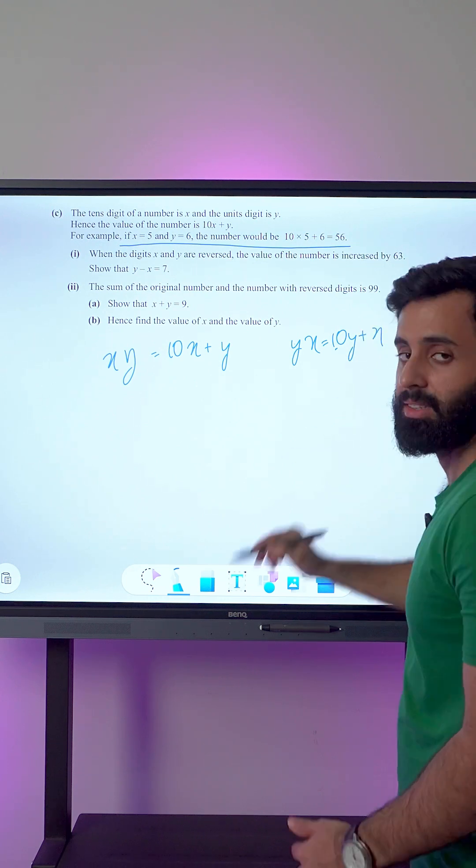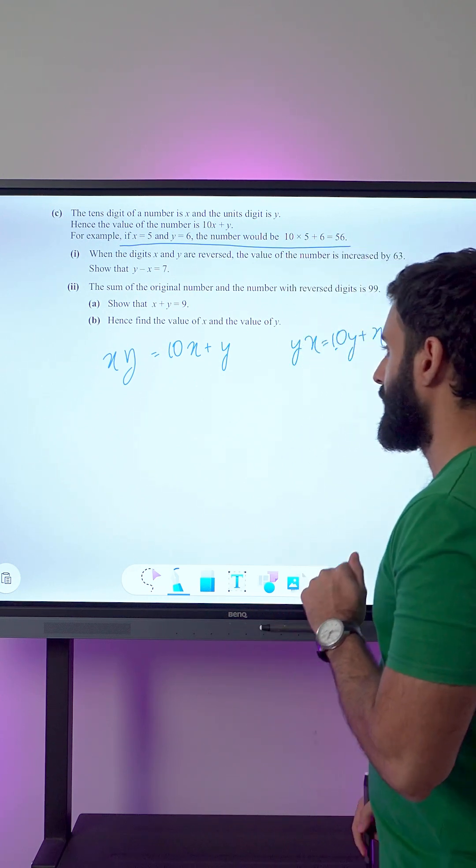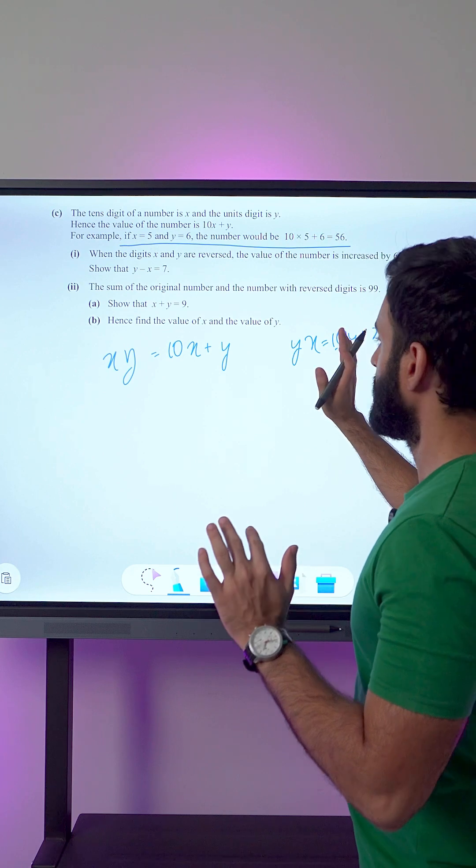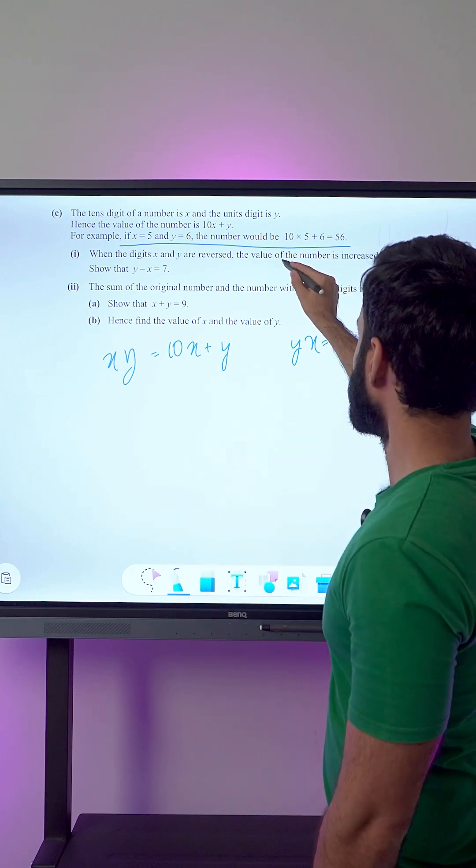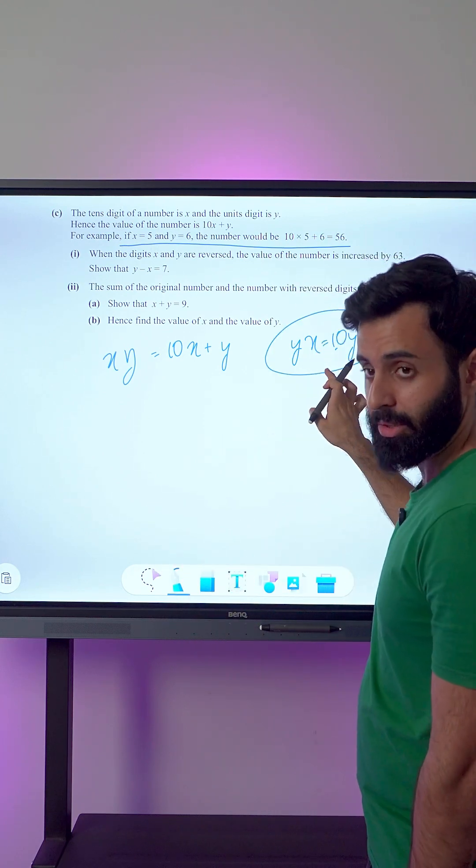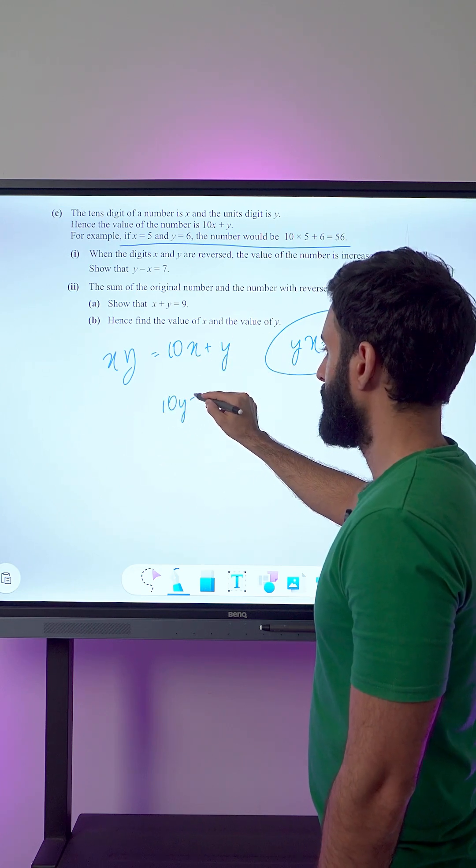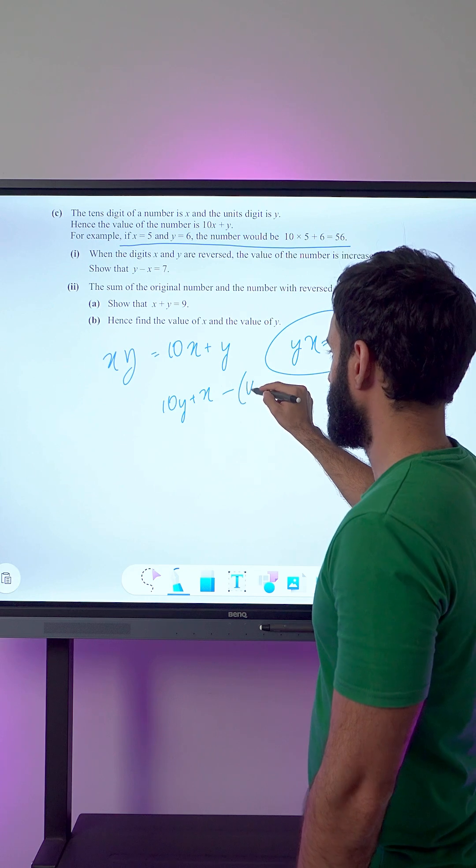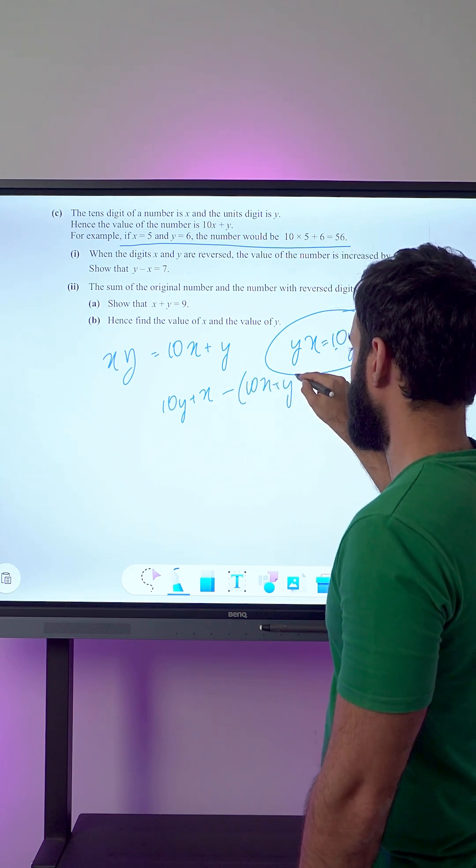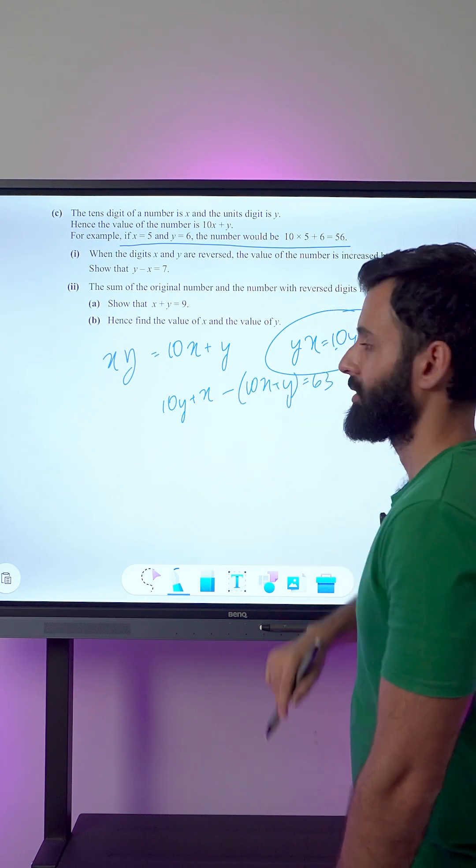According to the question, once we reverse, the number is increased by 63. That means 10y plus x is 63 more than 10x plus y. So we have 10y plus x minus 10x plus y equals 63.